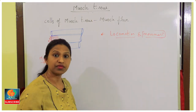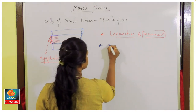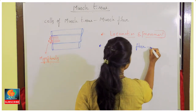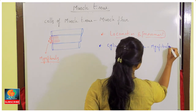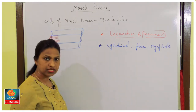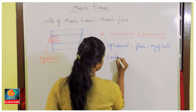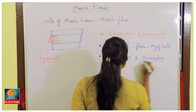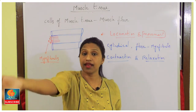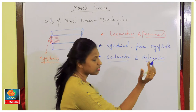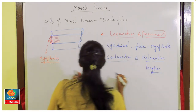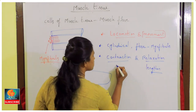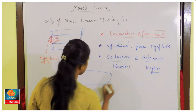In general, muscle tissue cells are cylindrical in shape and show many fiber-like structures called myofibrils. These muscle cells can show contraction and relaxation. When relaxed, the cell lengthens or widens; when contracted, it shortens.